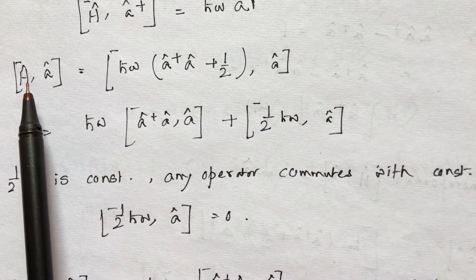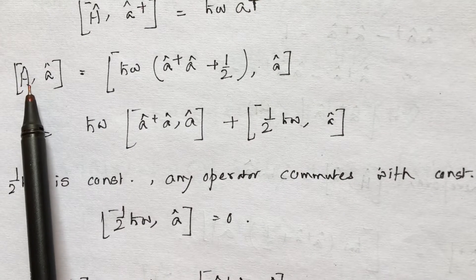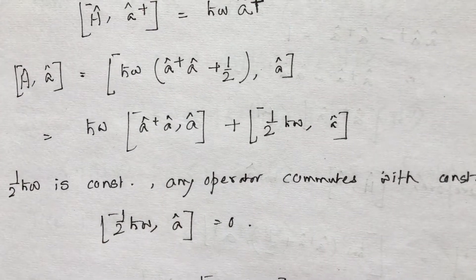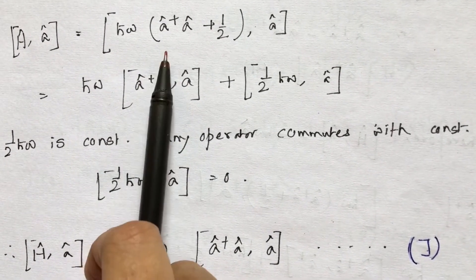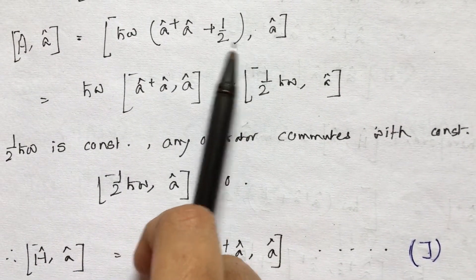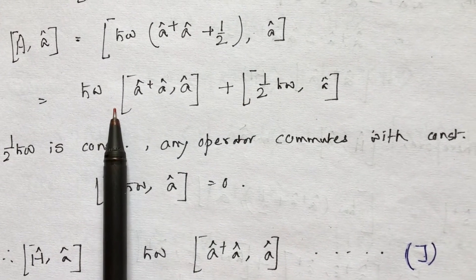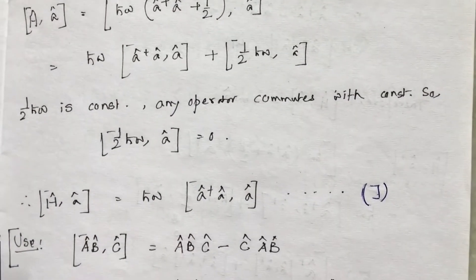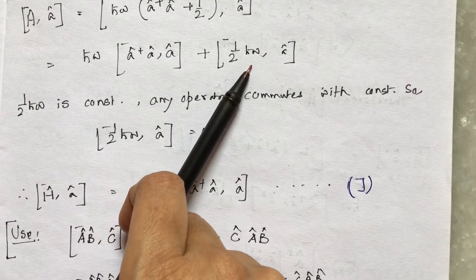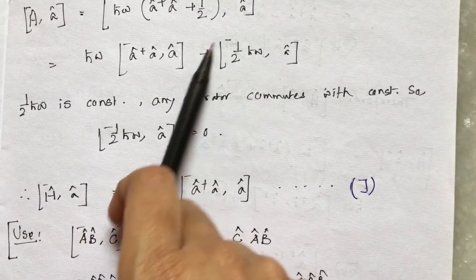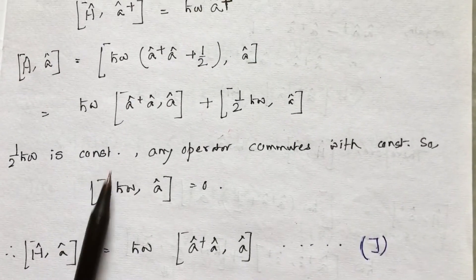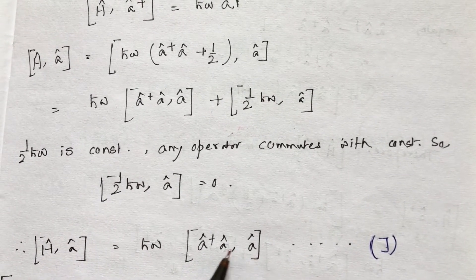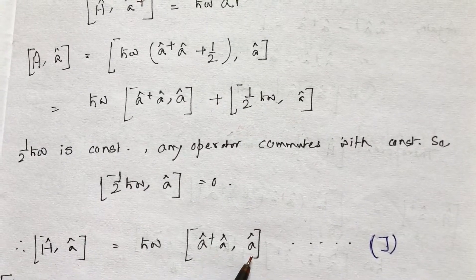I will start with the commutation relation of H and a, that is the Hamiltonian and the lowering operator. The Hamiltonian is this one, as I have shown in my previous video on the harmonic oscillator. After doing some algebra, the splitting of the two terms with a plus sign looks like this. Since half ℏω is a constant, it commutes with the operator and that term equals 0, leaving [H, a] = ℏω [a†a, a], which is my equation j.